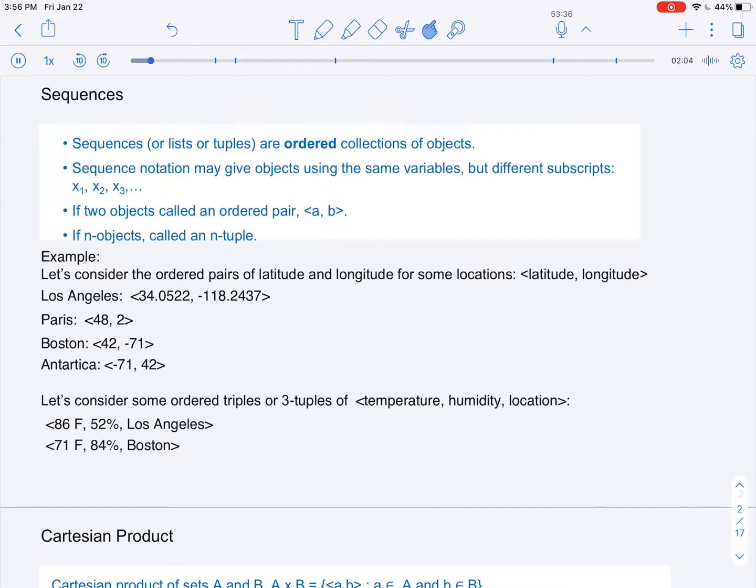Similarly for Boston, we have the temperature being 71 degrees Fahrenheit, humidity 84%, and the location being Boston. So that is an example of an ordered triple or a three-tuple.